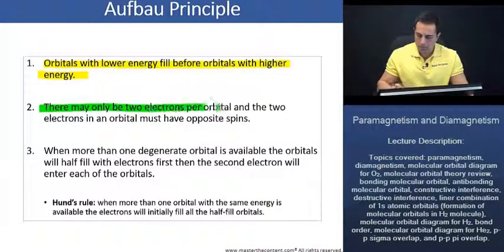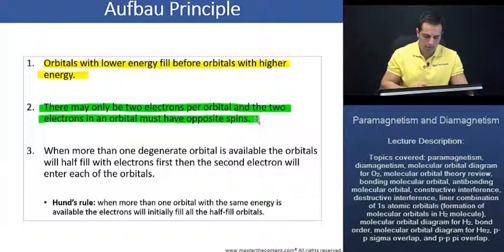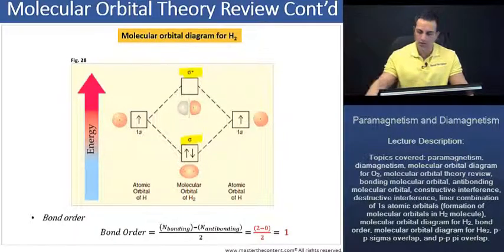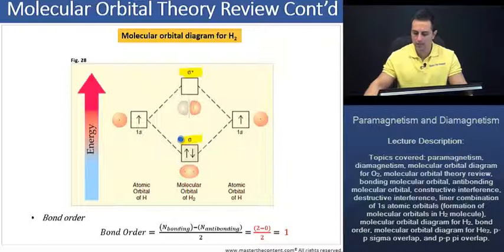Secondly, there may only be two electrons per orbital, and the two electrons in an orbital must have opposite spins. And as we see here, our sigma orbital complies as we have two electrons per orbital, and they have opposite spins.